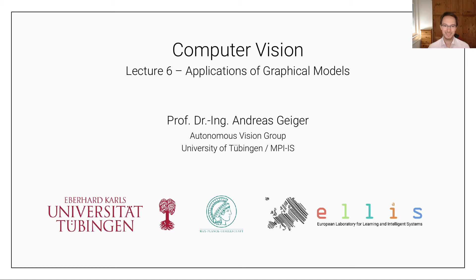Welcome to lecture number six of this computer vision class. In the last lecture we introduced, motivated by the ambiguities in the stereo matching problem, graphical models and a particular inference algorithm called belief propagation that allows us to compute maximum a posteriori solutions or MAP solutions and also marginals.